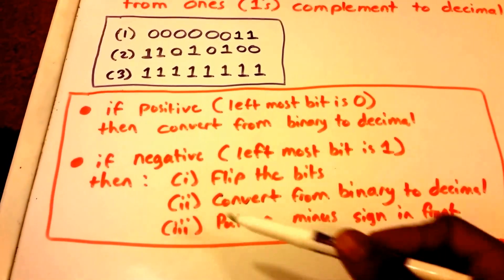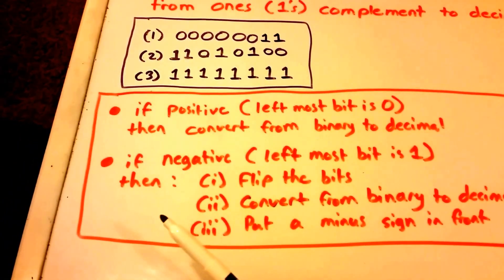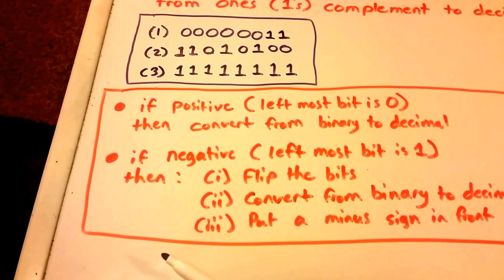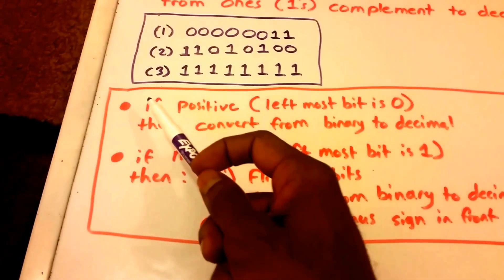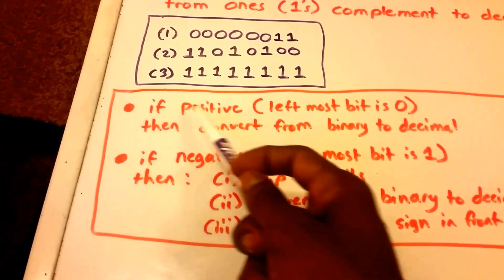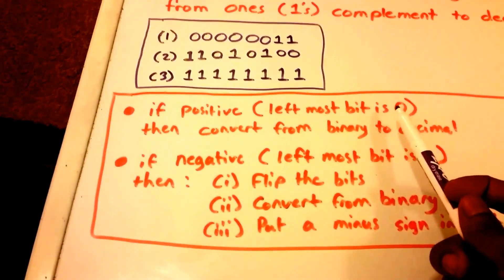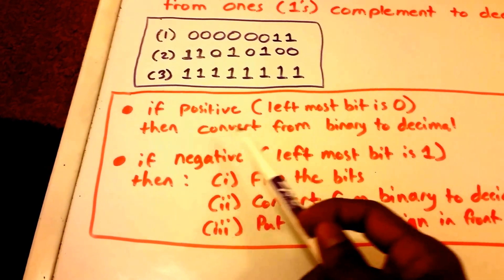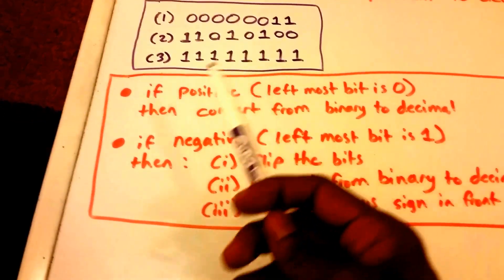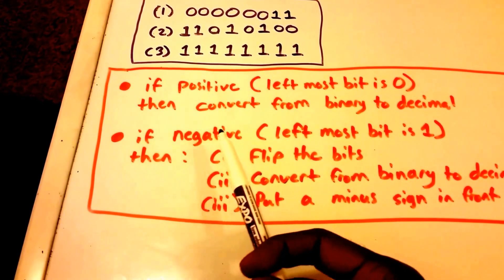The first thing we need to identify is whether the binary number is positive or negative. If the binary number is positive — meaning the leftmost bit is zero — then we just do a normal conversion from binary to decimal.